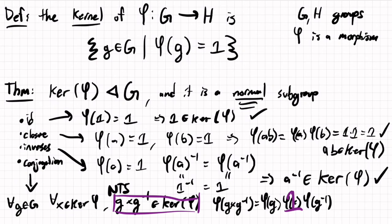but then this is one, because x is in the kernel. But then by the properties of morphism of groups, as we said above, these two things are inverses of each other, so that will be equal to one.